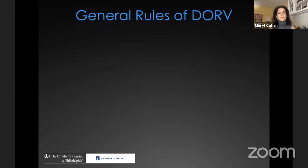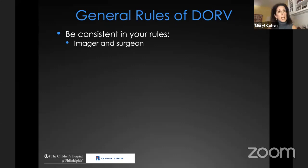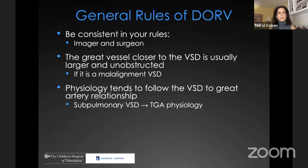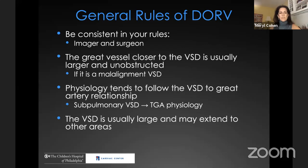A couple of general rules about double outlet right ventricle: you need to be consistent in your own rules and ensure the imager and surgeon are on the same page — whether Van Praagian or Andersonian. The great vessel closer to the VSD is usually larger and unobstructed in malalignment-type VSD, and the physiology tends to follow the VSD-to-great artery relationship: if you have a sub-pulmonary VSD, you are likely to have transposition physiology. The VSD in double outlet right ventricle tends to be quite large and may extend to other areas, but all of these rules can be broken.